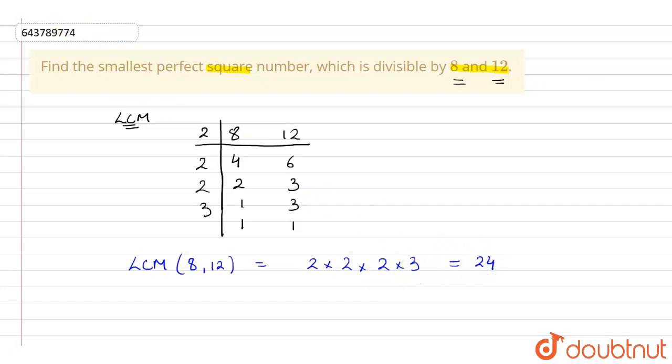Now we know that 24 is not a perfect square number because only one pair is available with us. 2 and 3 are not having any pair.